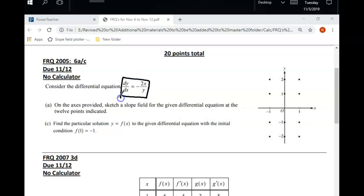Here's our differential equation. Remember, that's just a derivative, which means it's something that can tell us some slopes. It says on the axis provided, sketch a slope field for the given differential equation at the 12 points indicated. I'll do one point, and you guys can do the rest.